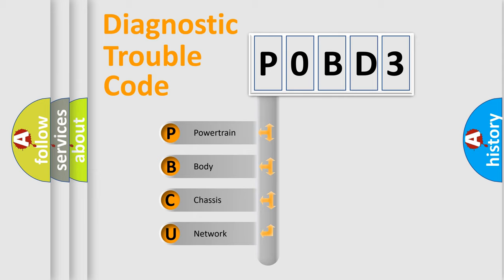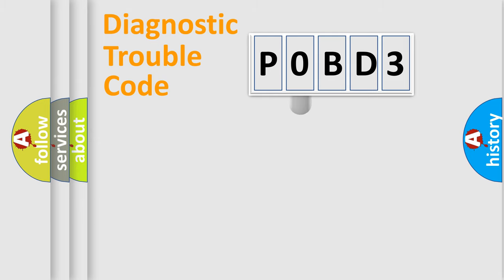We divide the electric system of automobile into four basic units: powertrain, body, chassis, network. This distribution is defined in the first character code.